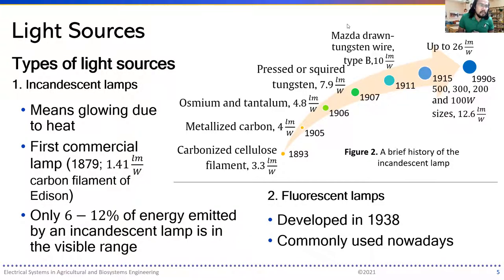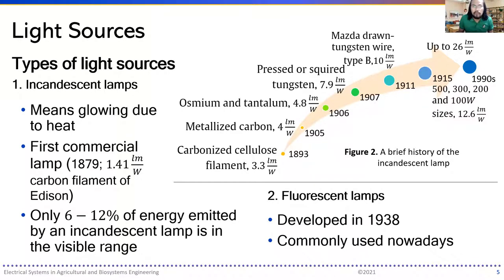We now move to the types of light sources, starting with the first one introduced in society: incandescent lamps. Incandescent refers to the glow produced by heat or very high temperature. The first commercial lamp was produced in 1879 and generated 1.41 lumens per watt — this was the carbon filament developed by Thomas Edison. Only 6% to 12% of the energy emitted by an incandescent lamp is within the visible range; the rest is in the infrared, beyond what the eyes can see.